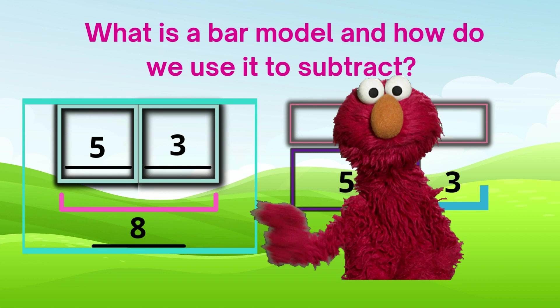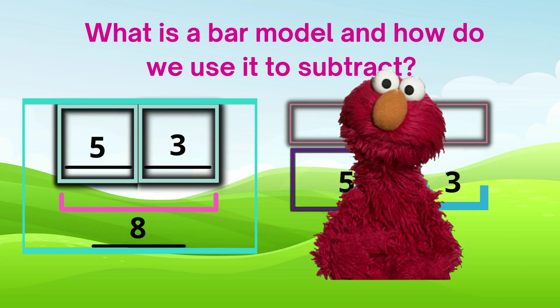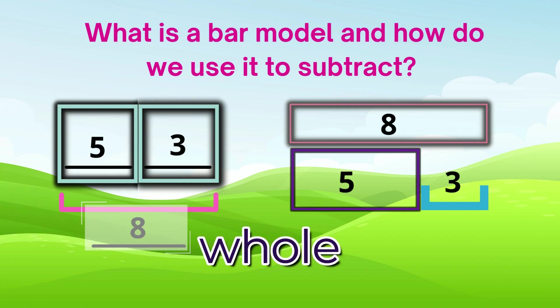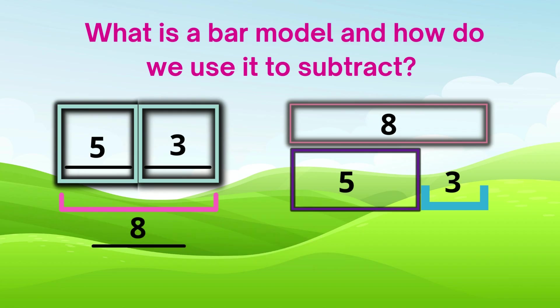This is probably the bar model that you are more familiar with. You probably used it in your addition sentences and modeling addition exercises. Here, as you can see, the whole is at the bottom where it says 8. That's the whole amount. When we added the parts, 5 and 3, we got 8.